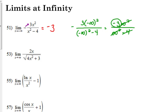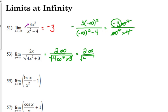Let's look at 53. It has a square root in it, so it's kind of weird. Let's plug in infinity and see what happens. We've got two times infinity on top. On the bottom we have the square root of four times infinity squared plus three. Adding three is not really going to change that number. So we have two times infinity over the square root of four times infinity squared. We can take the square root, giving two times infinity over two times infinity, which equals one. The limit of this is one.